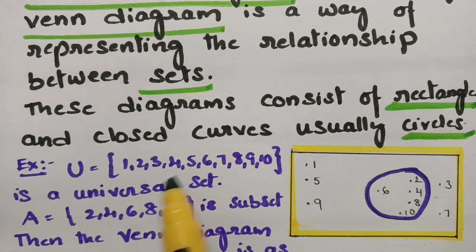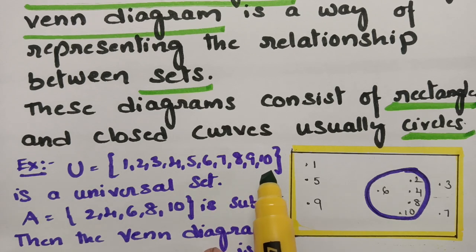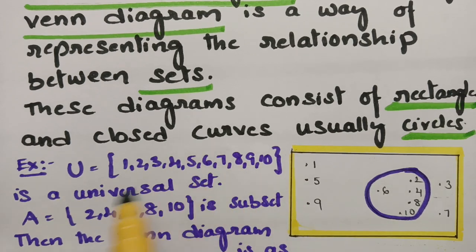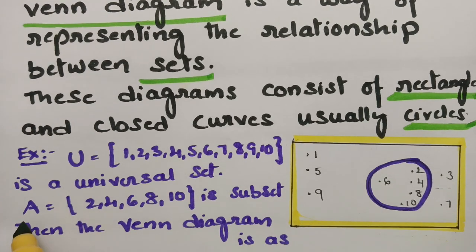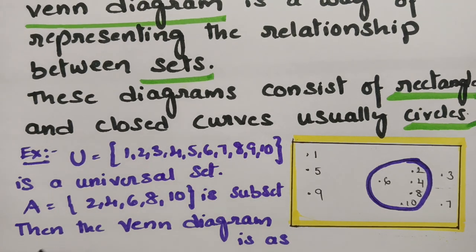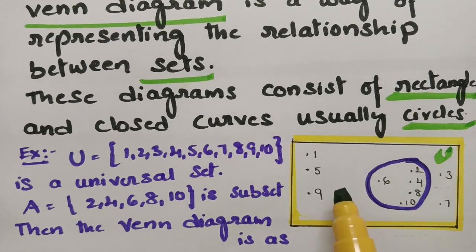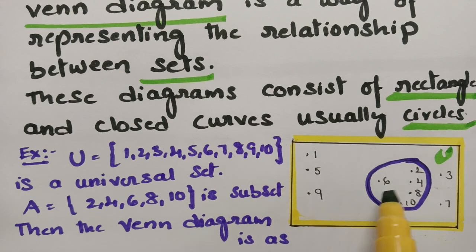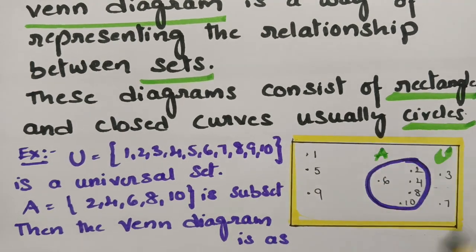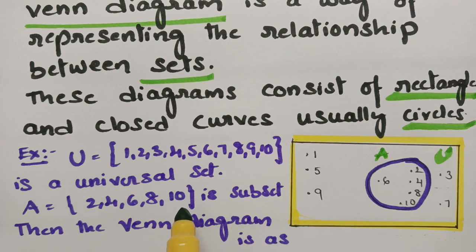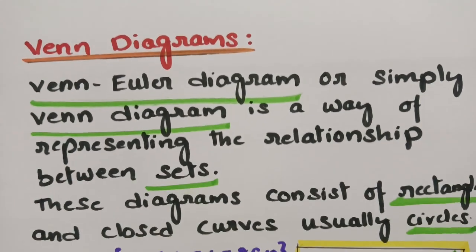Here, U contains elements 1, 2, 3, 4, 5, 6, 7, 8, 9, 10. These are all the elements of the universal set. And if you take A — that is 2, 4, 6, 8, 10 — as a subset of this main set, then the Venn diagram is as follows. U is the universal set which consists of 1 through 10, whereas A is a subset which consists only of elements 2, 4, 6, 8, and 10. So this is the way how to represent using a Venn diagram.